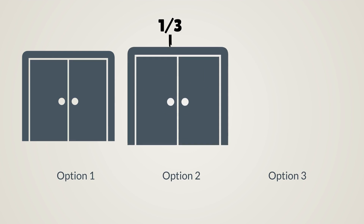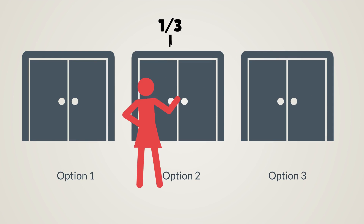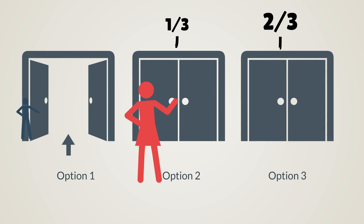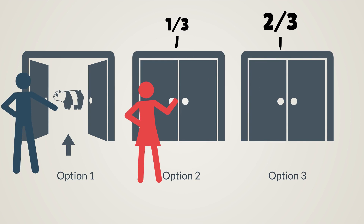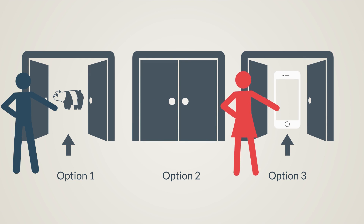When Lisa chose door number two, the probability of the iPhone being behind that door was one third, and behind the other two doors was two thirds. When the show host revealed the bear behind door number one, the probability of having an iPhone behind door number two was one third and behind door number three was two thirds. Lisa switched her choice and got her new iPhone.